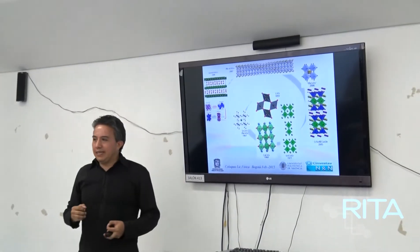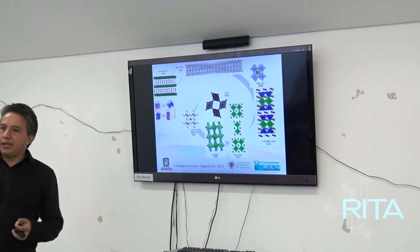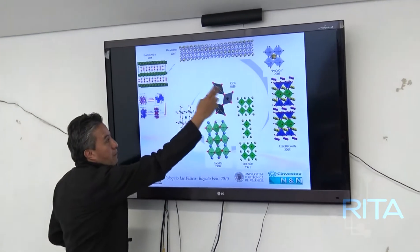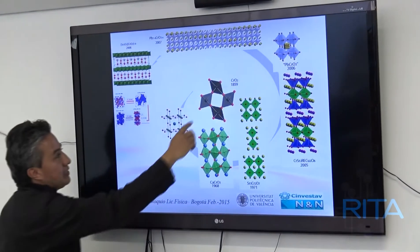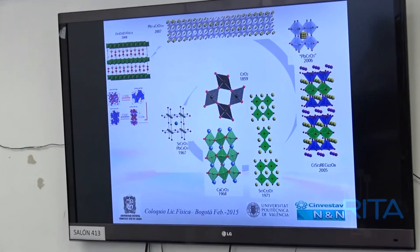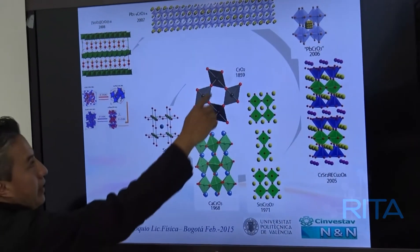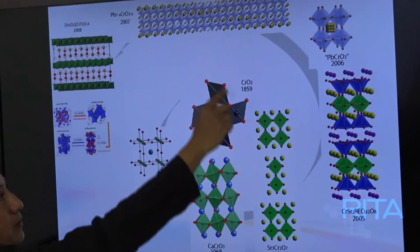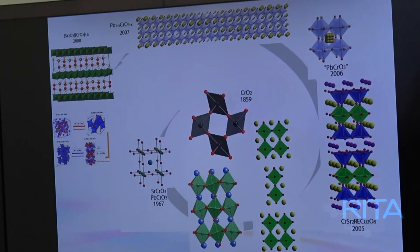En 1850 se estudiaba la celda unitaria colocando esferas y asumiendo que alrededor de ellas se tenían ciertos primeros vecinos, generando formas geométricas llamadas poliedros de coordinación. ¿Por qué poliedros? Porque es la forma como se relacionan alrededor de un átomo todos los átomos más cercanos — los primeros vecinos — formando poliedros de coordinación.